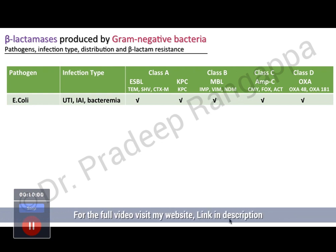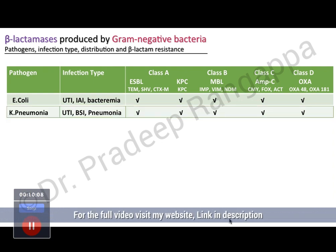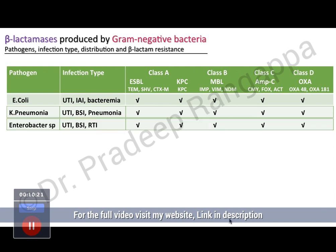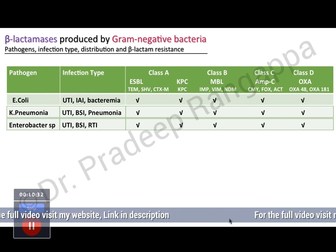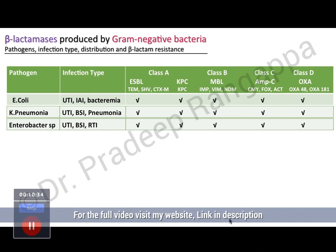Today the antibiotic we are talking about is very good against class D, which is OXA. There are around 21 types of OXA, and OXA-48 has been extensively researched. Klebsiella pneumoniae also produces all these enzymes and causes UTI, bloodstream infections, and pneumonia. Enterobacter species causing UTI, bloodstream, and respiratory tract infections also produce all classes — A, B, C, and D. Class B is the most dangerous as we do not have too many antibiotics, while class A is less potent and can be treated.